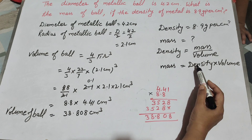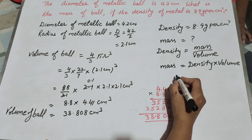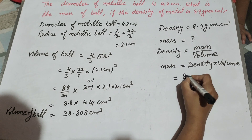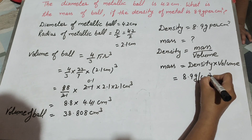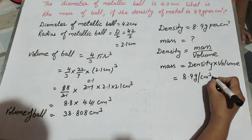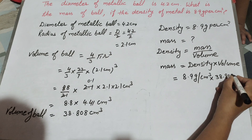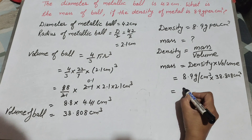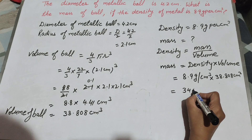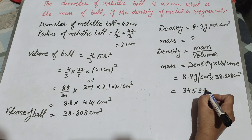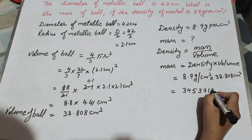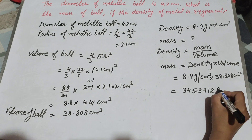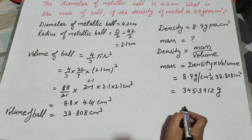Now we find the mass of the ball. We need density and volume. Density is given as 8.9 grams per centimeter cube, and the volume we found is 38.808 centimeters cubed. Mass equals 8.9 multiplied by 38.808, which gives 345.3912 grams.